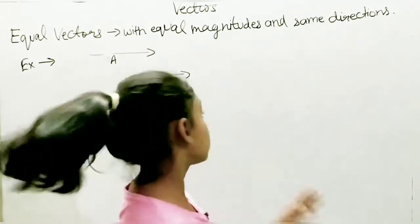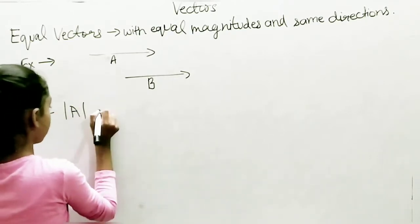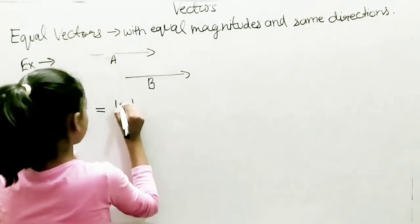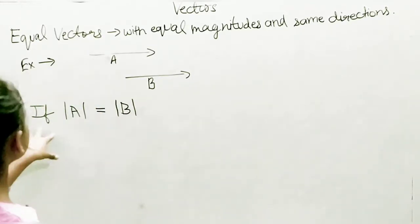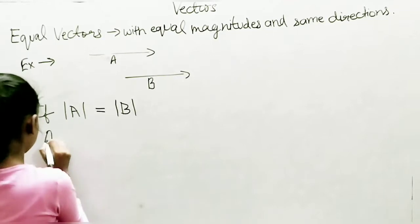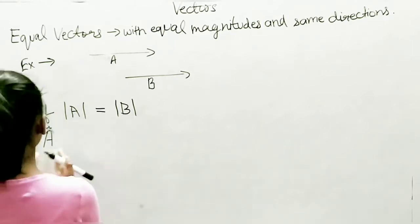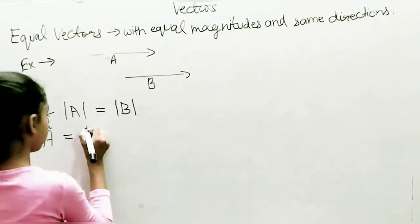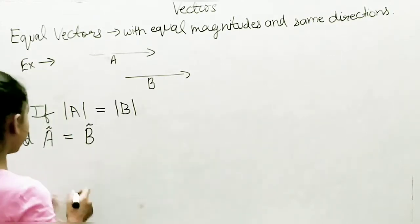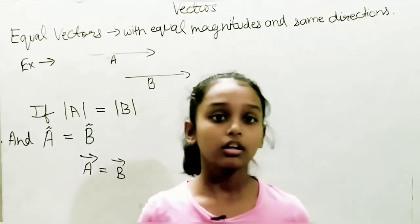These vectors are called equal vectors. If the magnitude of vector A is equal to the magnitude of vector B, and the direction of vector A (A-hat) is equal to the direction of vector B (B-hat), then they are called equal vectors. So we can write that vector A is equal to vector B.